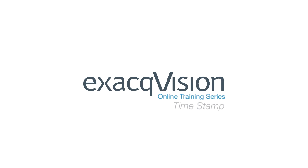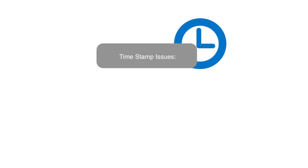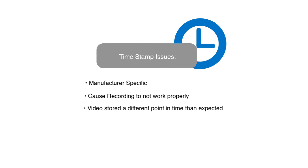When connecting IP cameras to an ExactVision server, the camera's timestamp should be automatically assigned based on the time that the server is set to. However, time issues can occur with a few manufacturers' cameras. Timestamp issues can cause recording to not work properly or for video to be stored at a different point in time than you would expect.